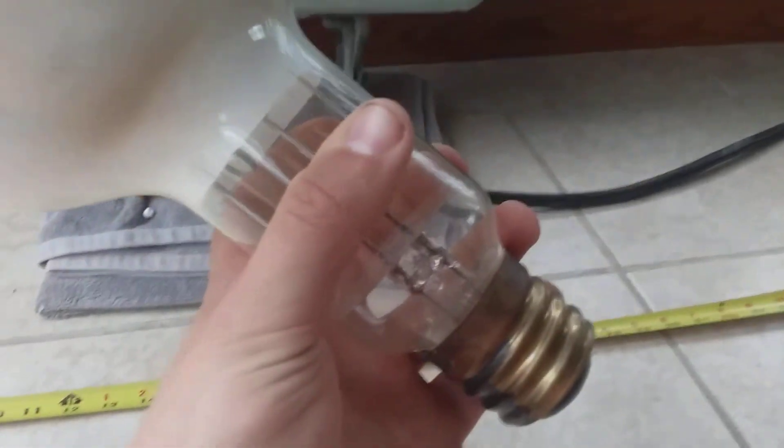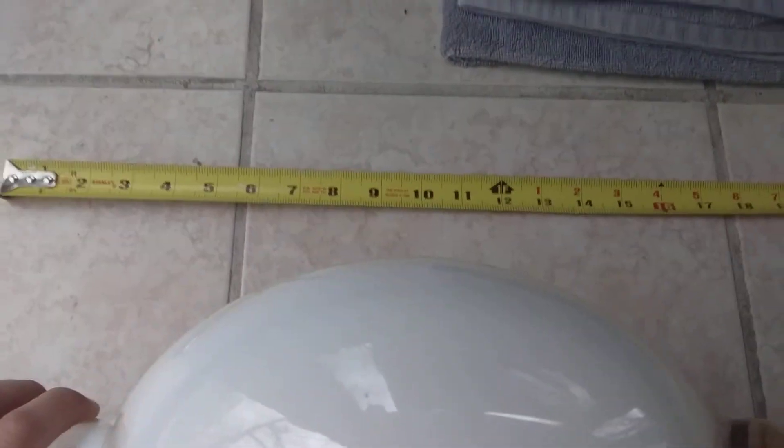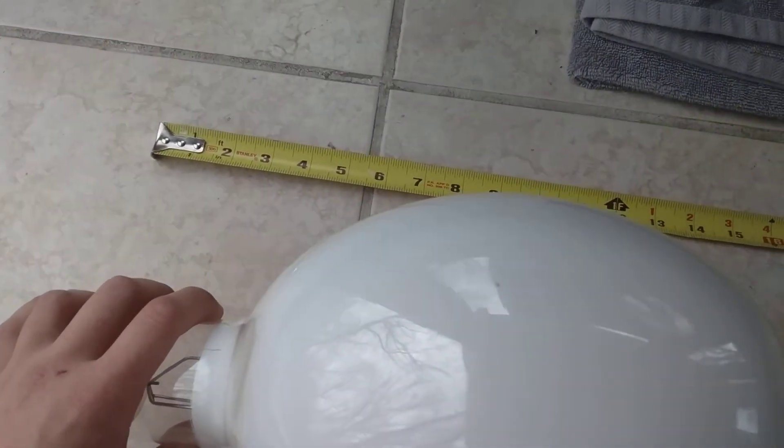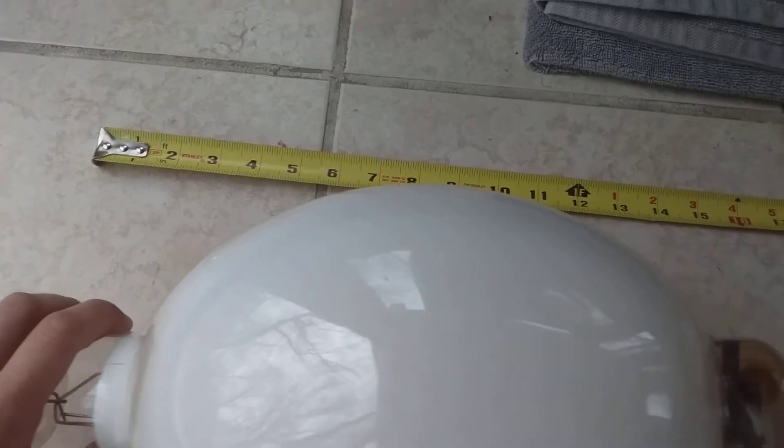Let's show you the bulb real quick. Here's the bulb right here. See my hand, small compared to it. Put it down carefully right here next to the measuring stick, the tape measure. You can see we're working with over a foot here in length. Huge bulb.